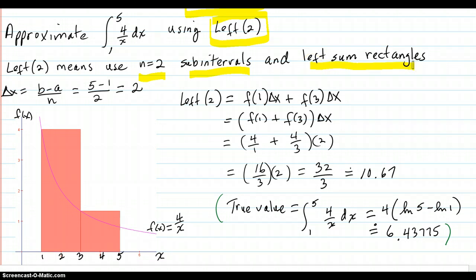Left 2 means use n equals 2 sub-intervals and use a left sum rectangle method. We figure out that the delta x that we should be using is your b minus a over n. That's from Calculus 1. And that's 5 minus 1 over 2, because there's two sub-intervals, and that's equal to 2.